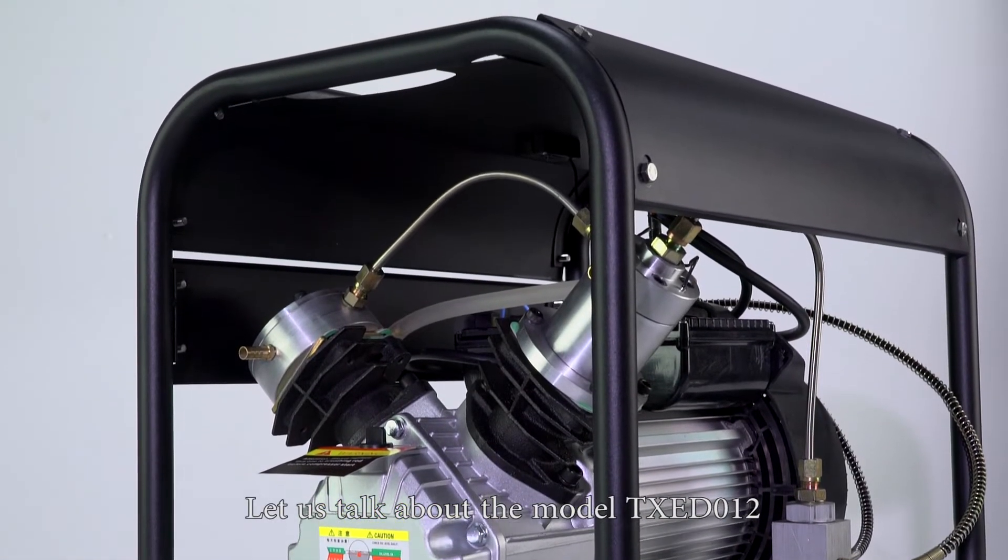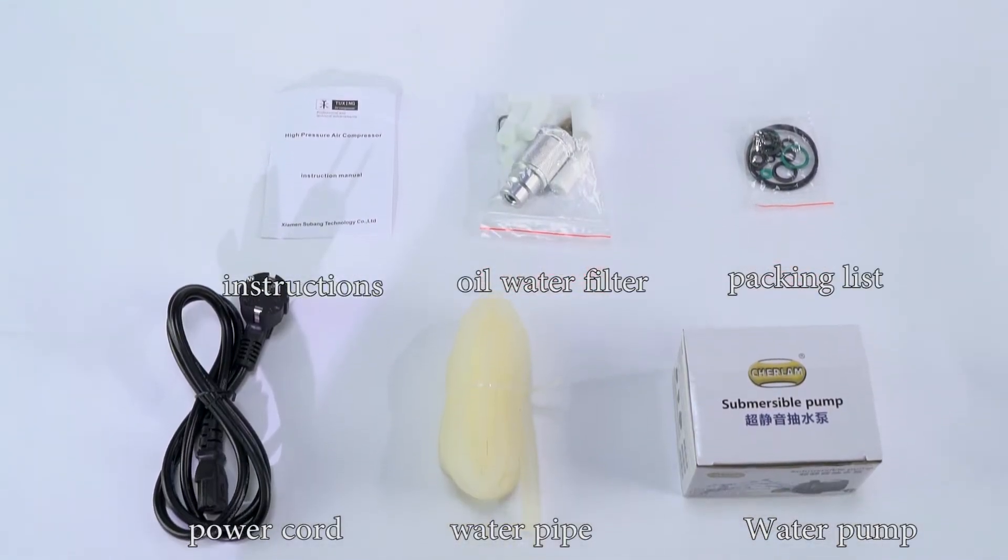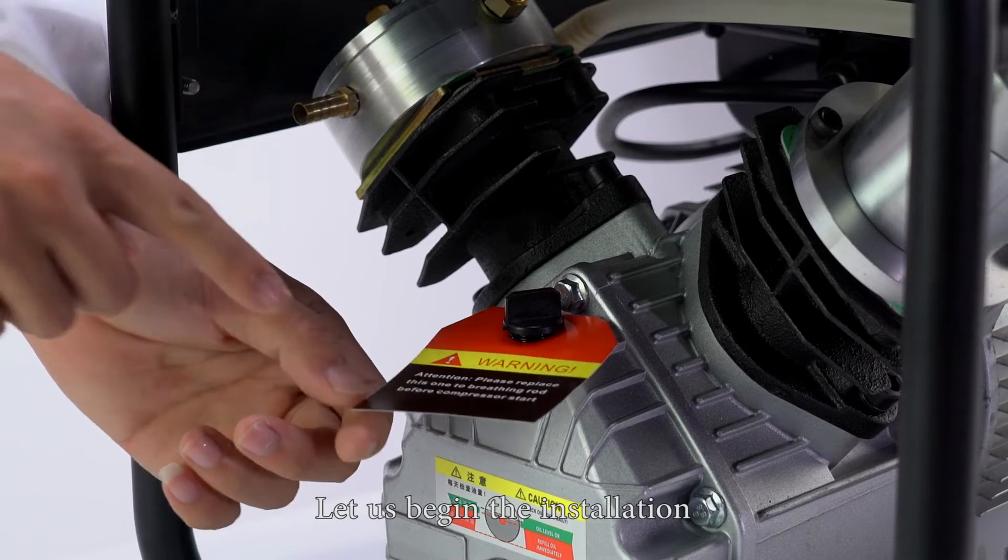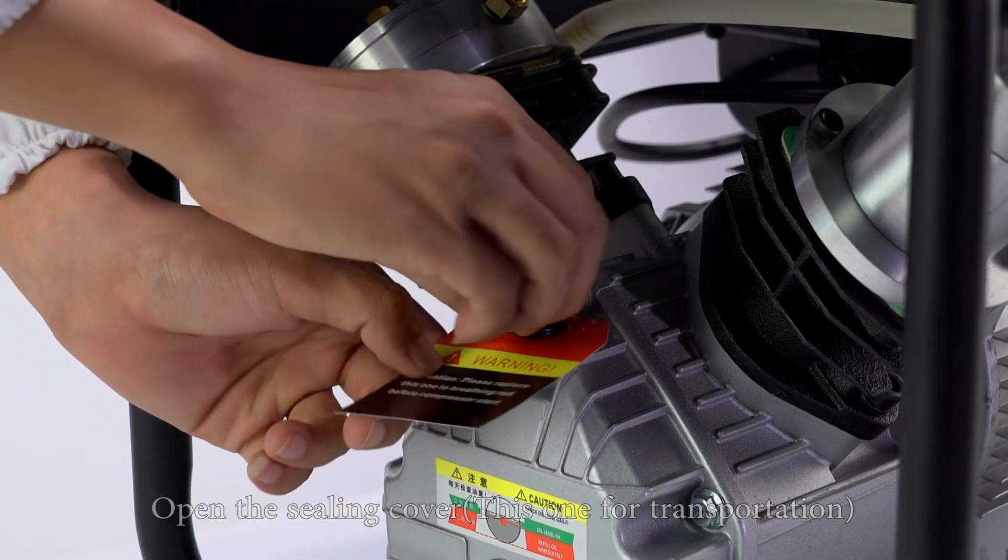Let's talk about model TXED012. Let's check the compressor accessories and begin the installation. First, open the sealing covers, which are used for transportation.